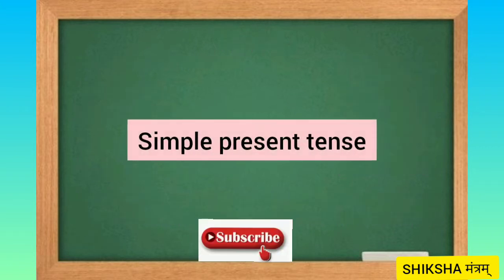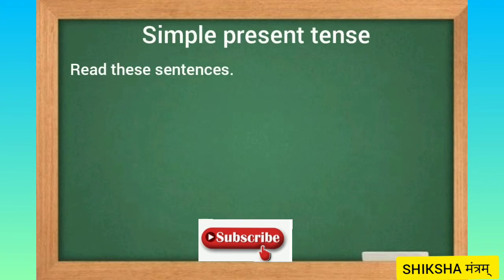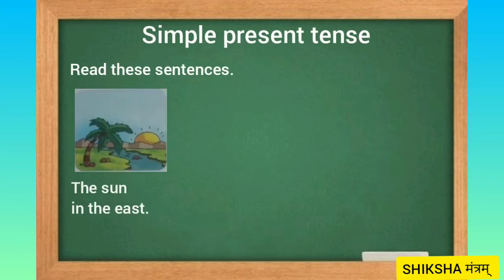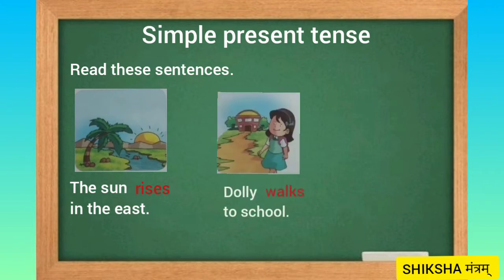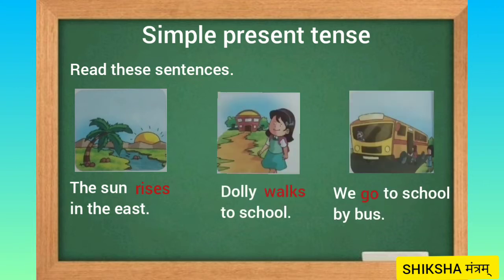Now let's see simple present tense. Read these sentences: The sun rises in the east. Dolly walks to school. We go to school by bus. In all these sentences the verbs rises, walks, and go state what happens every day and are in the simple present tense.